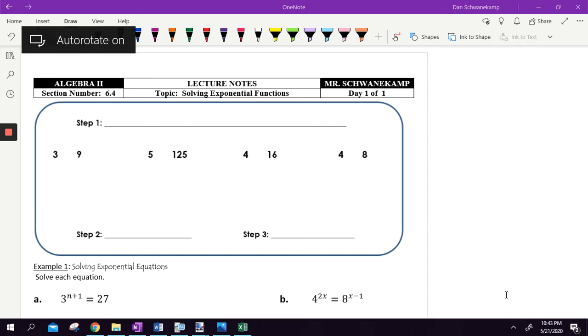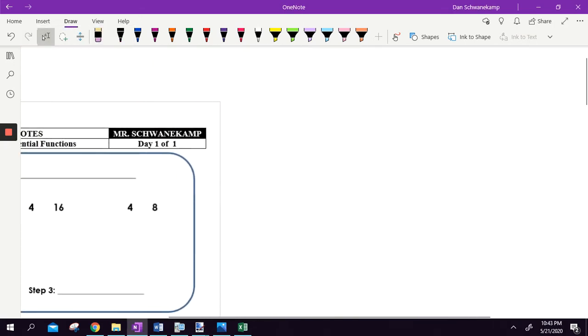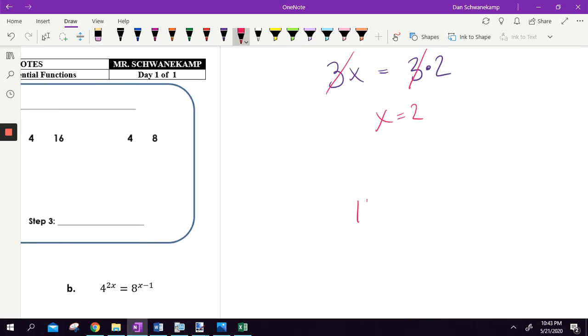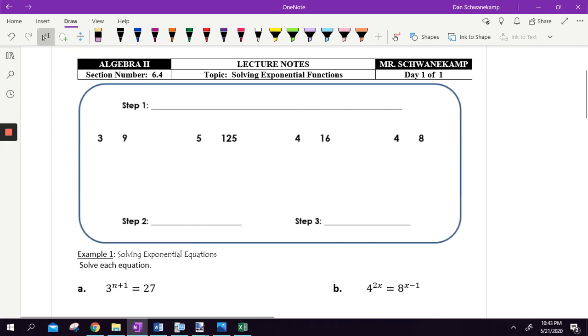So first of all, what if I gave you this problem right here? Let's say I said 3 times x is equal to 3 times 2. What do you think x would be? You're multiplying by 3 on both sides, so x equals 2. Done. That's an easy math problem. If we could get a problem to this state right here, then it's a pretty easy concept from there to solve. And really, that's kind of what we're doing today.